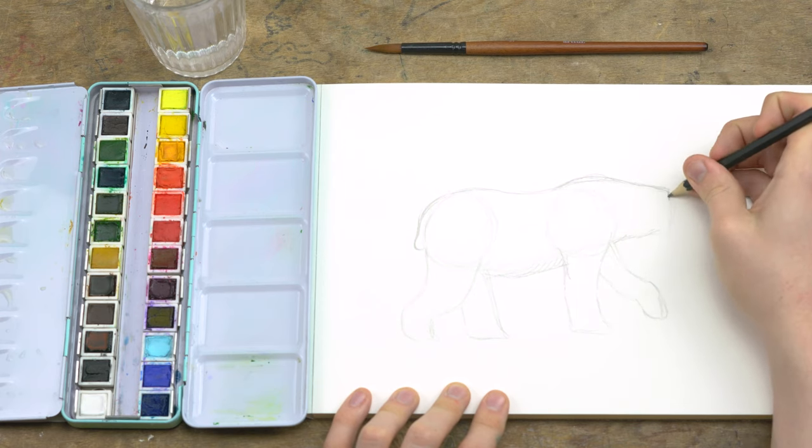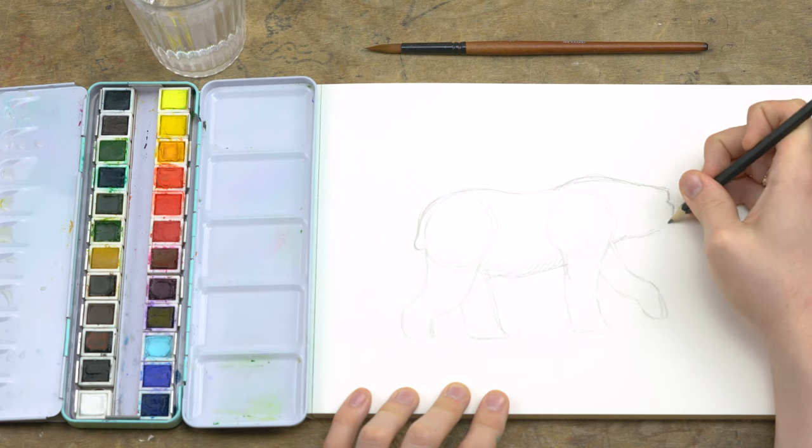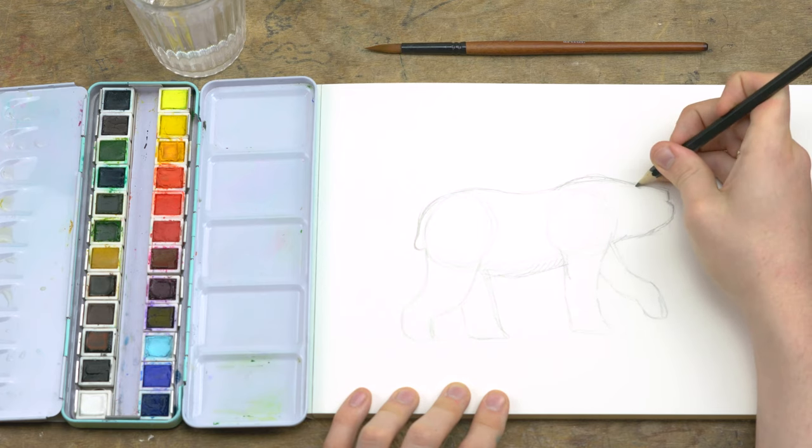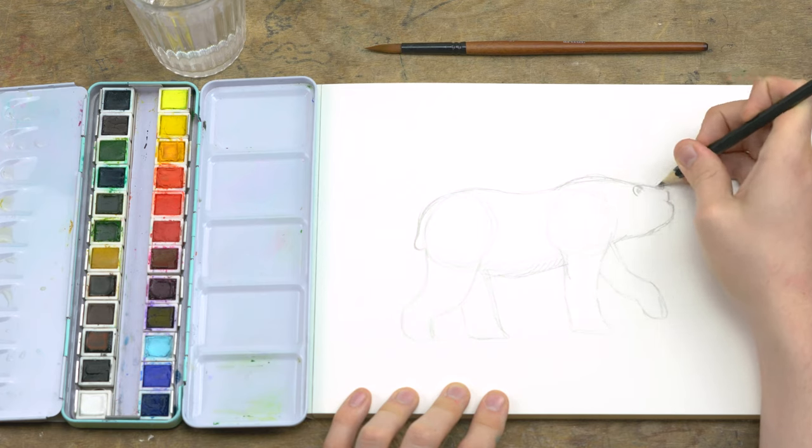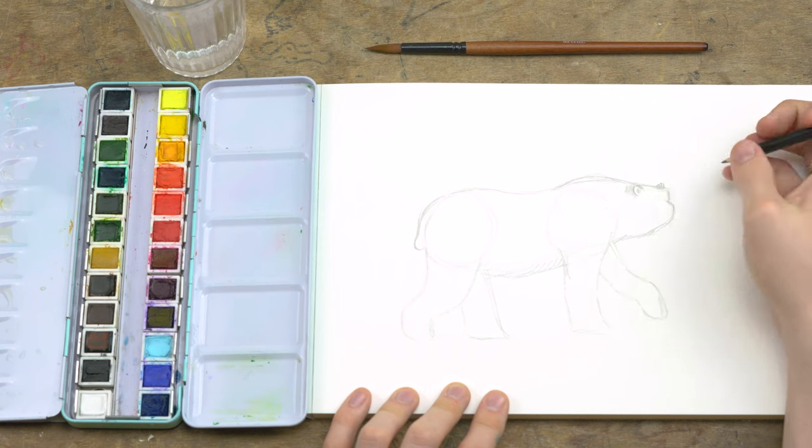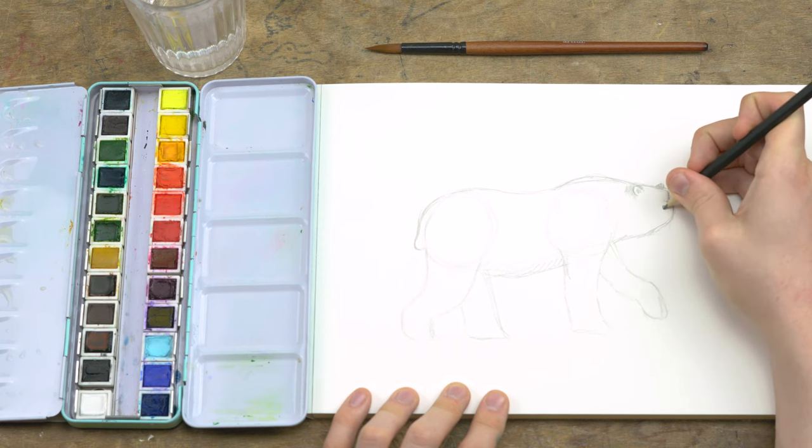From the angle that we're drawing it from, the polar bear doesn't seem to have any kind of discernible neck and its features are quite boxy. So you're just filling in the nose, its mouth, its ears and its eyes.